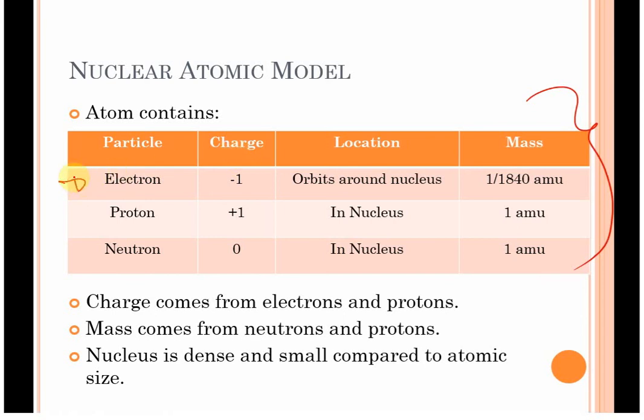Thompson discovered the fact that there were electrons, came up with the idea that there should have been protons. Millikan came up with the charge and the mass of the electron. And Rutherford showed us what is in the nucleus while the electrons are somewhere else.